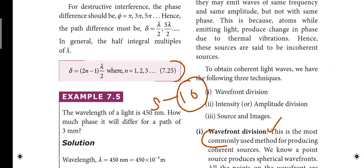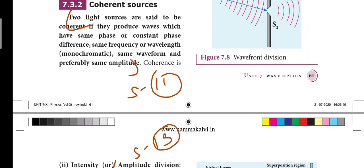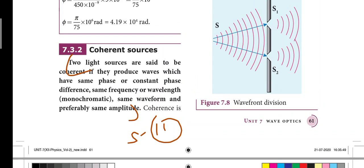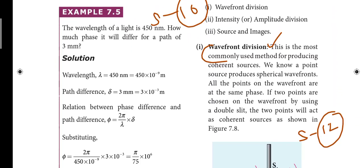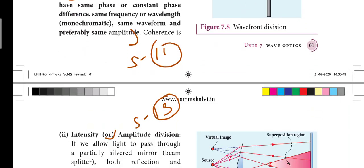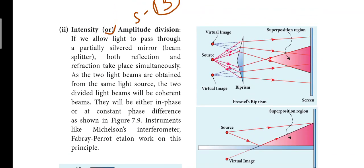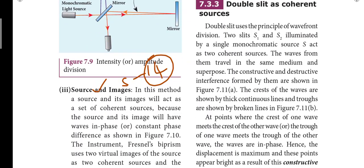Next page number. This is the tenth short answer. Next: seventh short answer — that page number, the key is the coherent sources, bold letters. That is the eleventh short answer. Next: wavefront division — that is the heading, and the heading is the twelfth short answer. Next page number: intensity or amplitude division — that is the thirteenth short answer. The fourth heading, source and images — that is the fourteenth short answer.